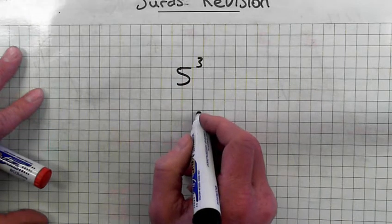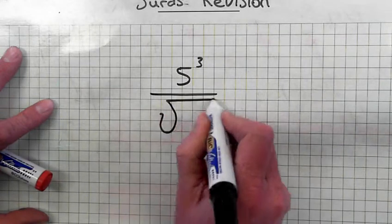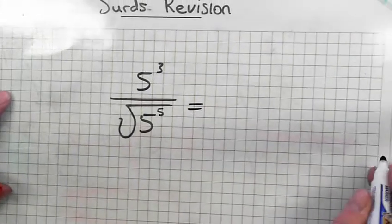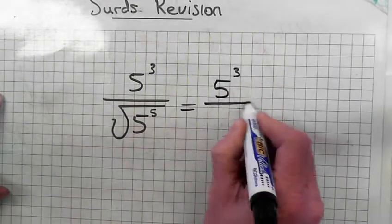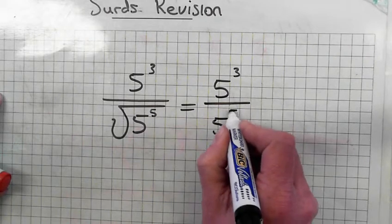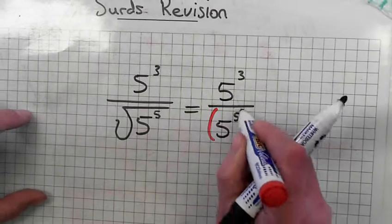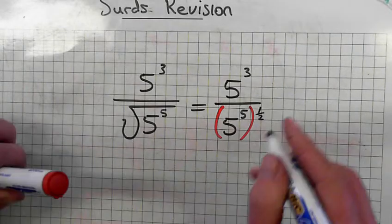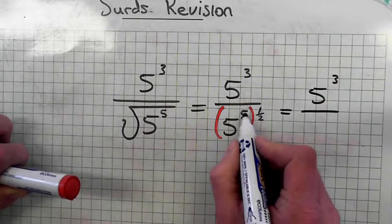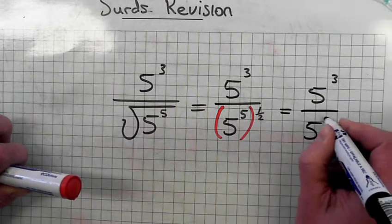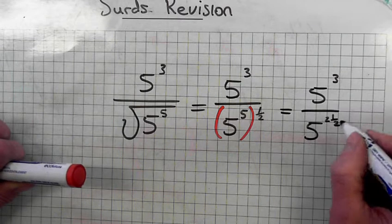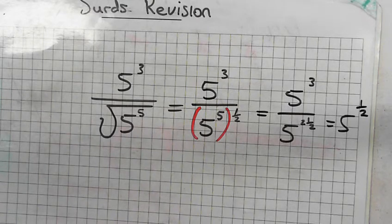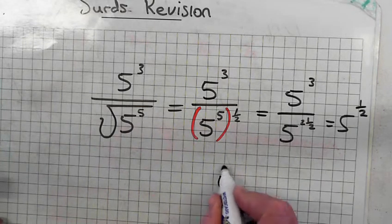Five to the power of three over the square root of five to the power of five. We'll leave the top alone and work on the bottom. Write five to the power of five in brackets — the square root sign means the power of a half. So five times a half is two-and-a-half. Now it's three minus two-and-a-half, giving five to the power of a half.